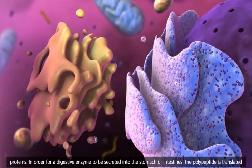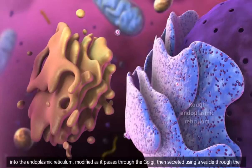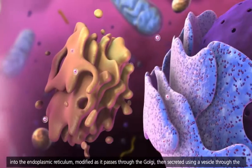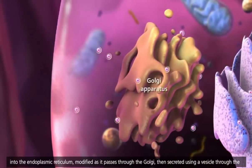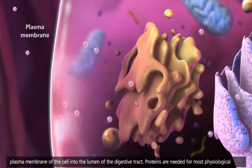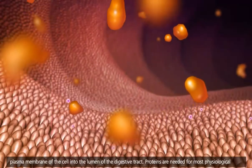In order for a digestive enzyme to be secreted into the stomach or intestines, the polypeptide is translated into the endoplasmic reticulum, modified as it passes through the Golgi, then secreted using a vesicle through the plasma membrane of the cell into the lumen of the digestive tract.